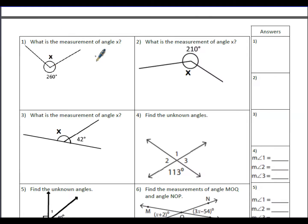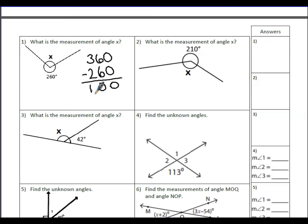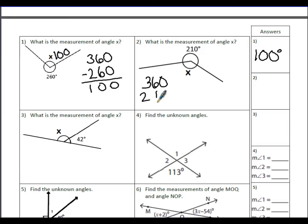To find the measurement of angle X in a full circle: there are 360 degrees total and 260 degrees are already given, so angle X equals 100 degrees. In the next problem, the reflex angle is given as 210 degrees, so 360 minus 210 equals 150 degrees for the missing angle.